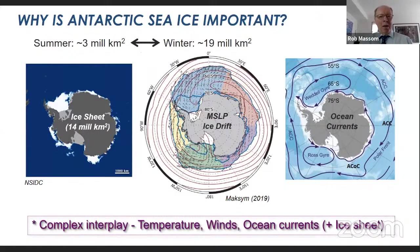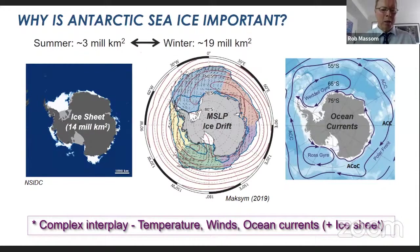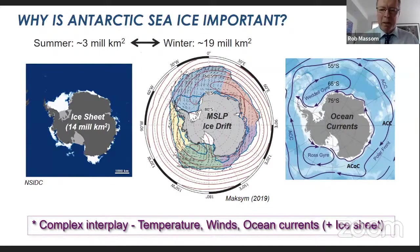I'll start off with why sea ice is important. Claire and Arnold have already covered this to a large extent. In this talk, I'll concentrate first and foremost on Antarctic sea ice. In summertime, it covers approximately 3 million square kilometres around the Antarctic continent — the ice sheet itself is about 14 million square kilometres. But leading into winter, this area expands tremendously, up to about 19 million square kilometres. The reasons behind this are a complex interplay of temperatures, winds, ocean currents, and also interactions with the ice sheets. The sea ice is very sensitive to change and variability in each of these factors.